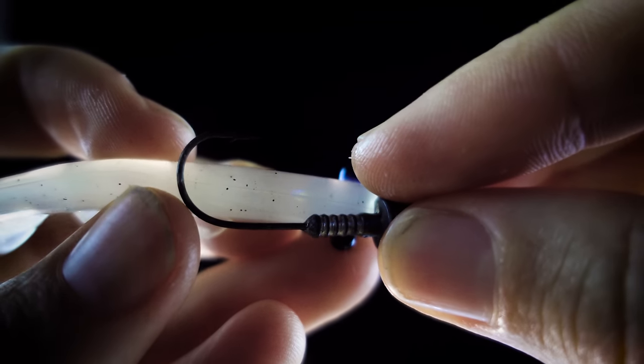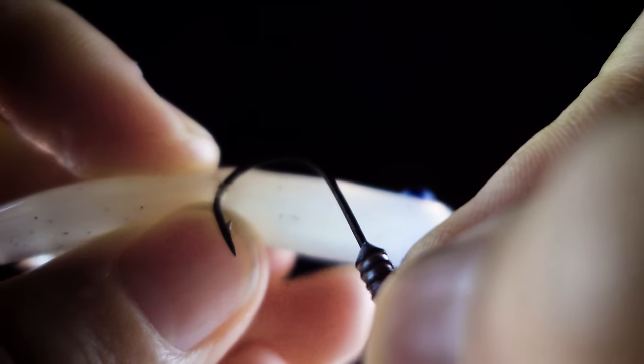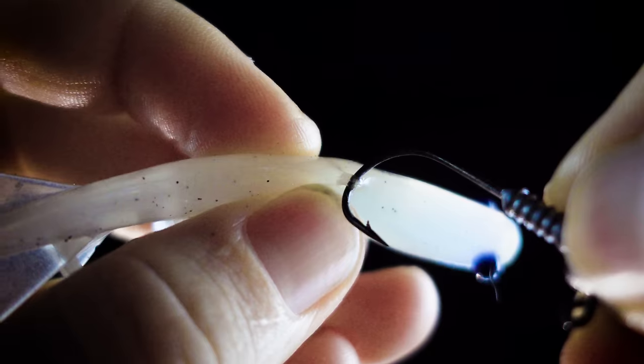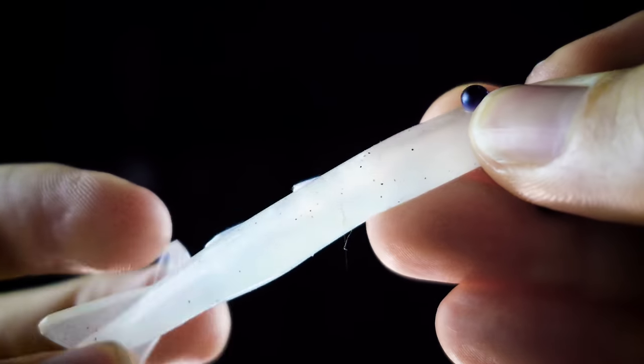Once you've done that, you literally just make a nick in the plastic right where that hook belly was, basically just to make a little mark there so that you can see as you feed it through where to pop it out.